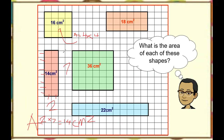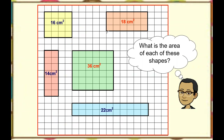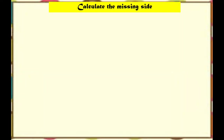Make sure that when you are looking for the area of a square or rectangle, you always show the working and also the unit. Now you know how to find the area of a square and rectangle using the formula: area equals length times width.